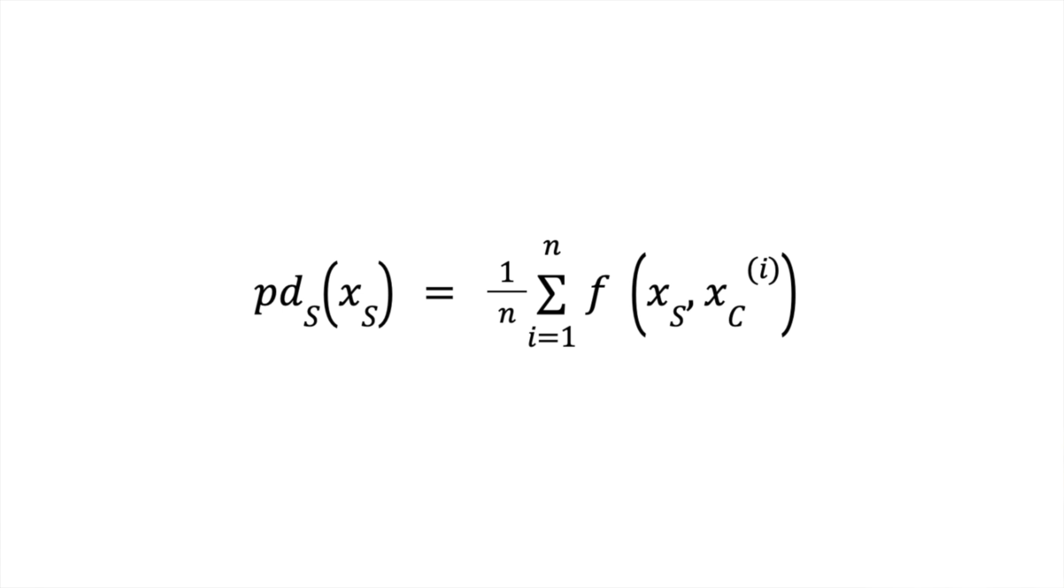We can also generalize the PD function. This is the PD function for a set of features S. C will contain all the features excluding those in S. We now also average over N observations. This can be up to the total number of observations in the dataset. Until now, we have only discussed cases where S consists of one feature. In the last equation, S only contained car age. When applying PDPs, we will show a PDP of two features. We will generally not include more than two features in S. Otherwise, it becomes difficult to visualize the PD function.